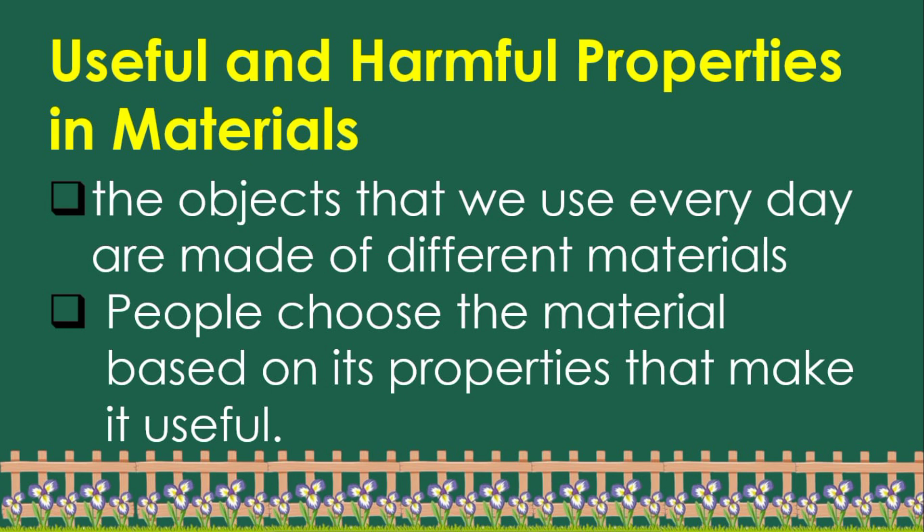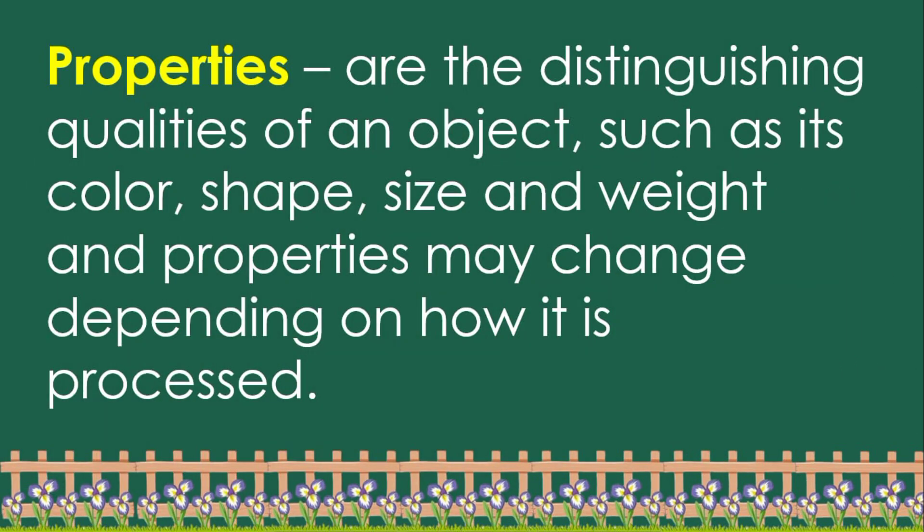The objects that we use every day are made of different materials. People choose the material based on its properties that make it useful. Properties are the distinguishing qualities of an object, such as its color, shape, size, and weight. Properties may change depending on how it is processed.